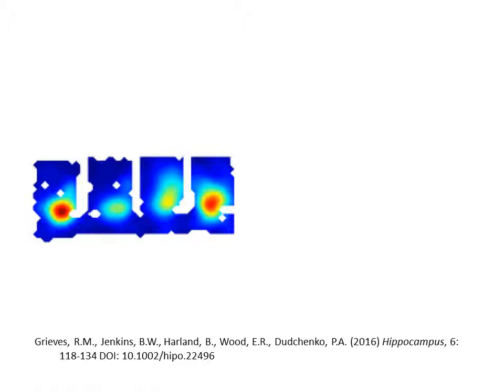As Spears and colleagues had found, we observed that individual place cells would fire in each of these four compartments, as shown in this illustration of our data.